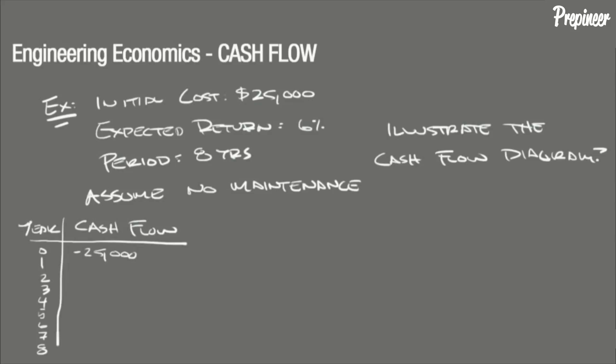After the purchase, the company is expected to get a return of 6% annually on the original purchase price. So 6% of $25,000 is $1,500. This will run for the remainder of the period we are analyzing, which is eight years.